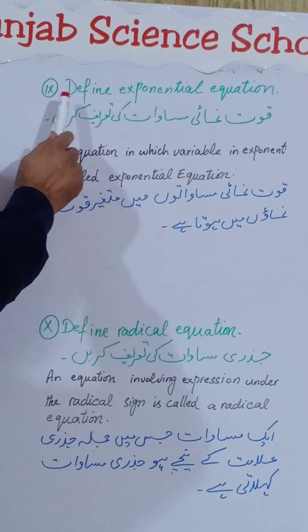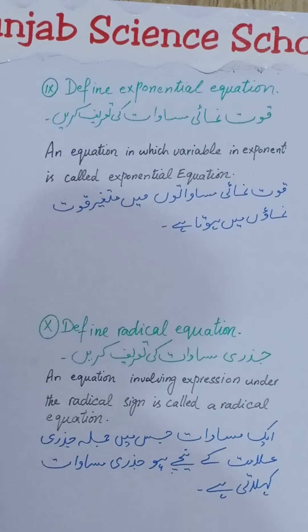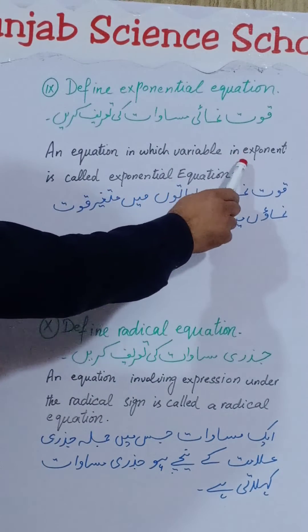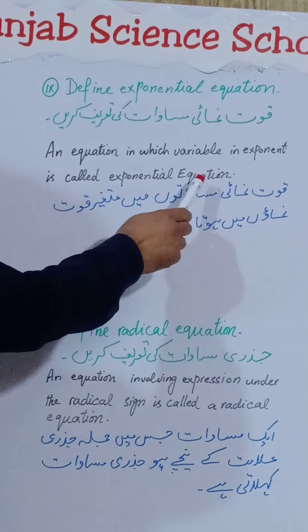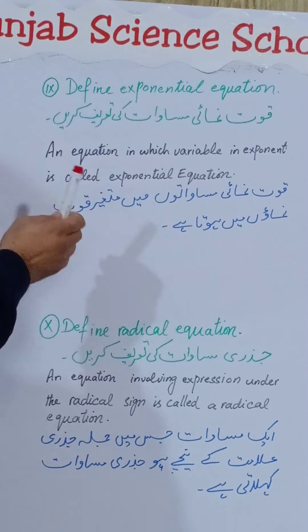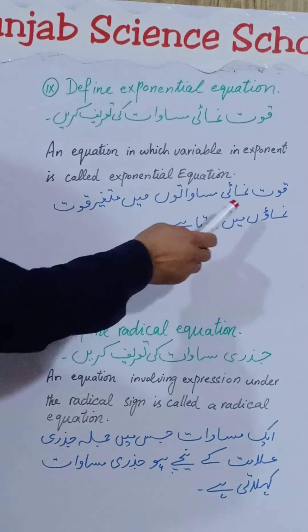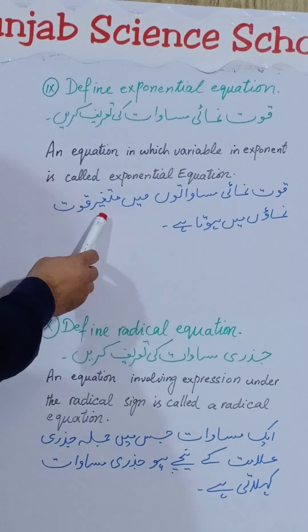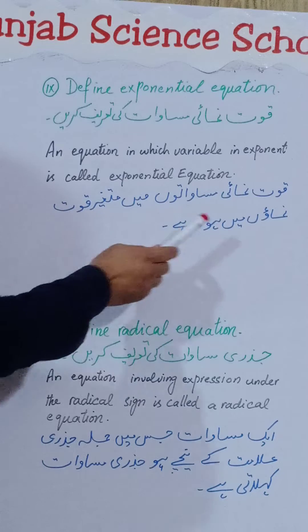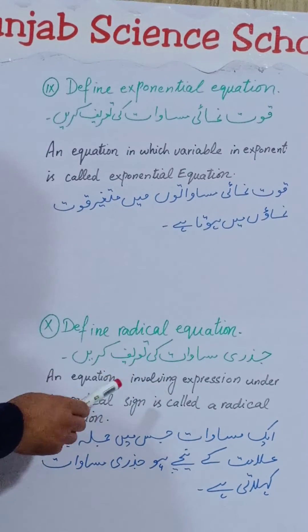9th Part — Define Exponential Equation: قوت نمائی مساوات کی تعریف کریں۔ An equation in which the variable is the exponent is called an exponential equation. اردو میں: قوت نمائی مساواتوں میں متغیر قوت نمائوں میں ہوتا ہے۔